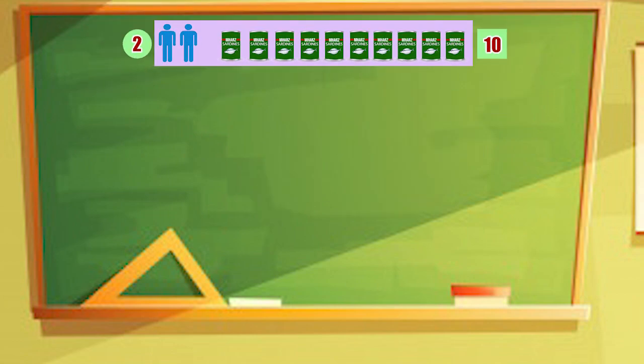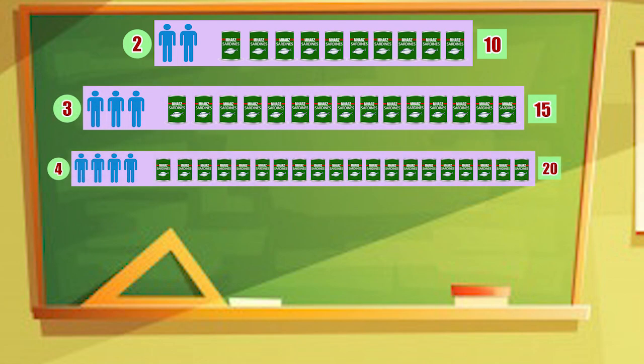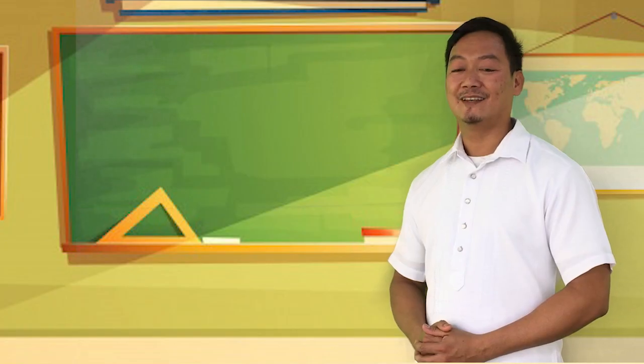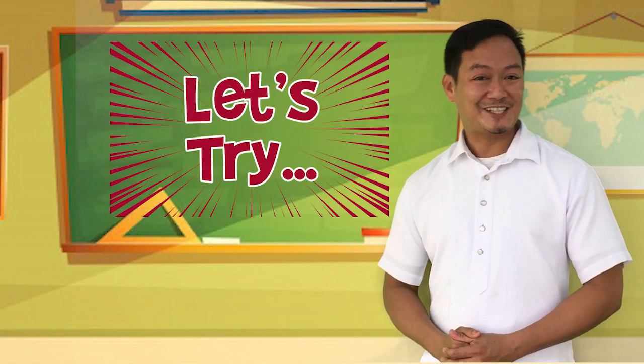So if two persons is to 10 cans of sardines, three is to 15, and four is to 20. How about five persons? Correct. It's 25. Now let's try.